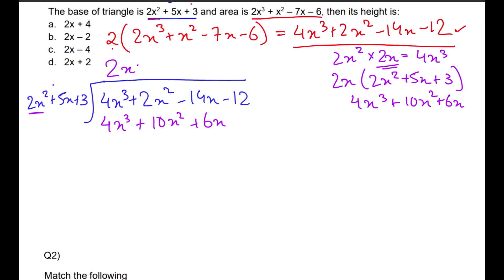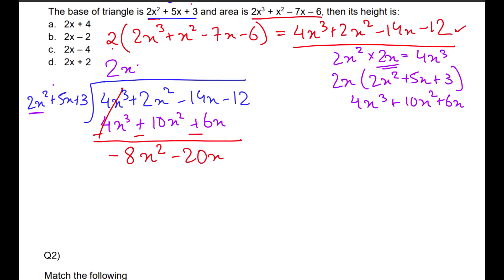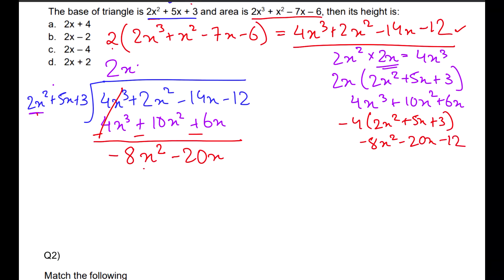Now it's time to subtract. I will be changing the signs of the polynomial at the bottom — plus and minus will cancel off. I'm left with −10 and +2, which is −8x², and then −20x after bringing down. Now I repeat the same process — I try to multiply something with 2x² to get −8x², and that number is −4. So multiplying −4 by (2x² + 5x + 3) gives −8x² − 20x − 12. Bringing the entire equation down I write that below, giving −8x² − 20x − 12.